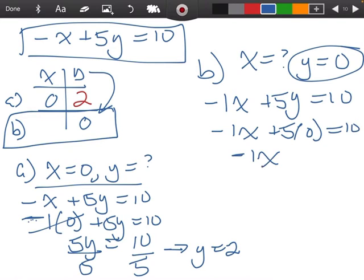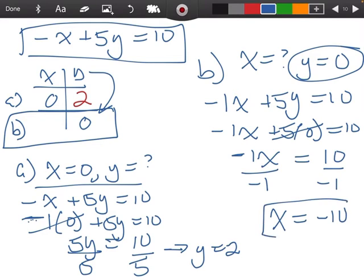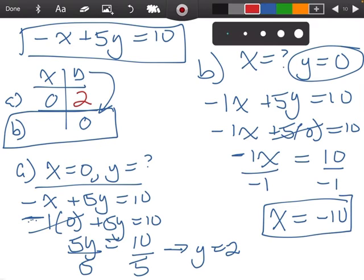Negative 1x, remember 5 times 0 is 0, that piece is going to go away, it's equal to 10. When I divide both sides by negative 1, we're coming up with x equals negative 10. I'm going to come back over here and put a negative 10 right there.